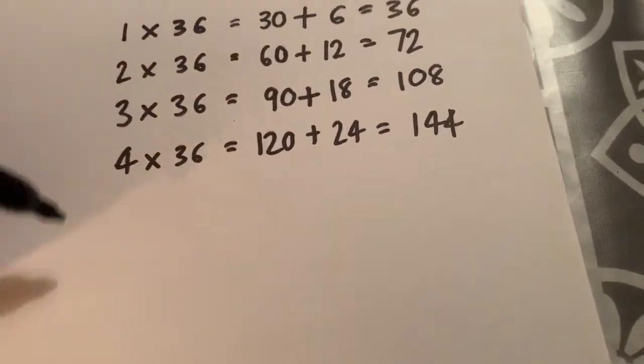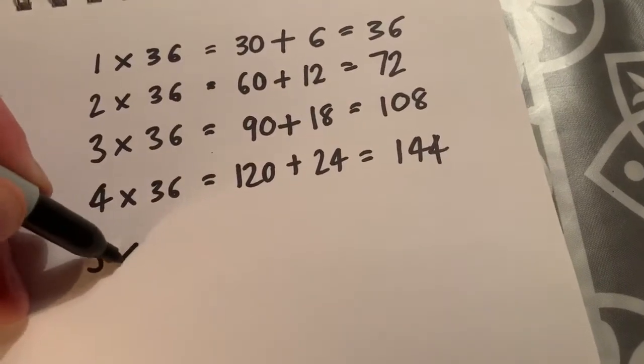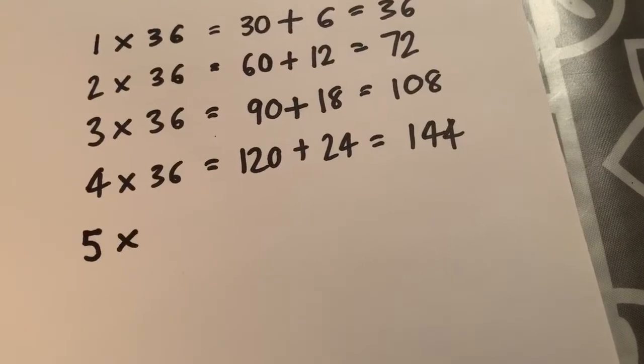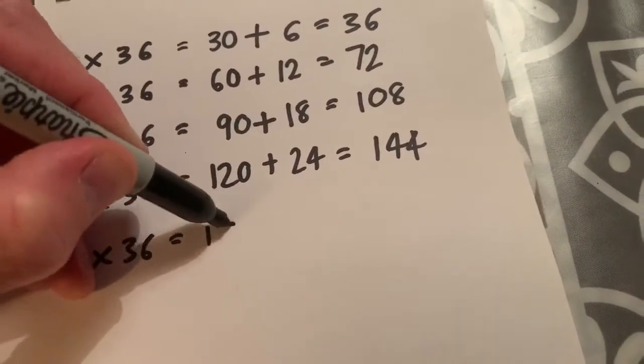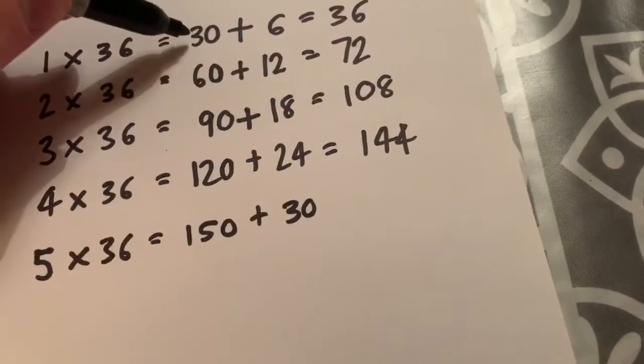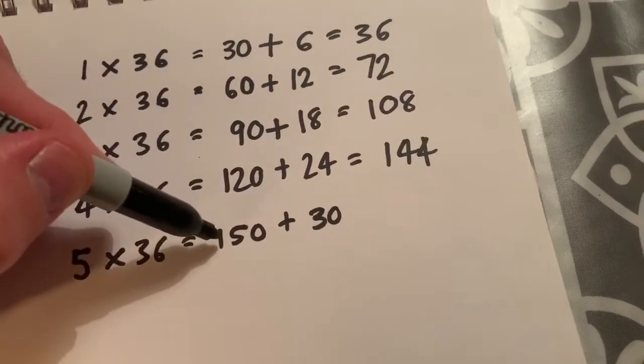4 times 36 equals 120 plus 24 equals 144. And remember, I said that I normally do 7 or 8 of these. It's usually enough for most long division questions in year 6. So 5 times 36, 150 plus 30.